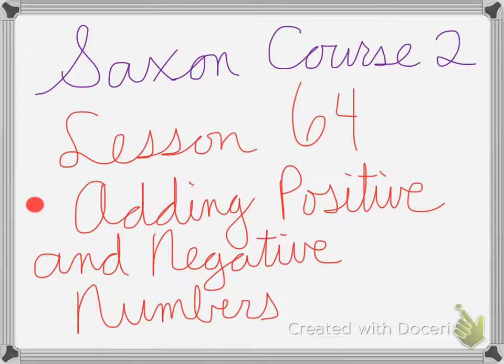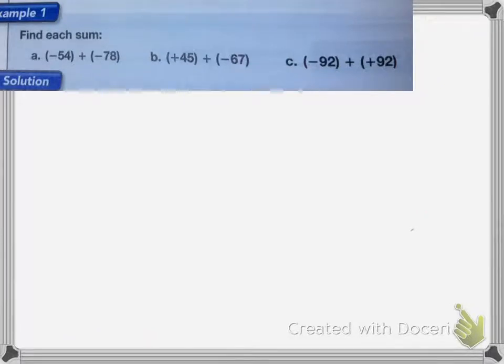Saxon Course 2, Lesson 64, is on adding positive and negative numbers. I need to find the sum of each of these numbers.